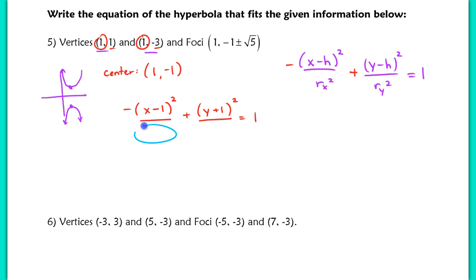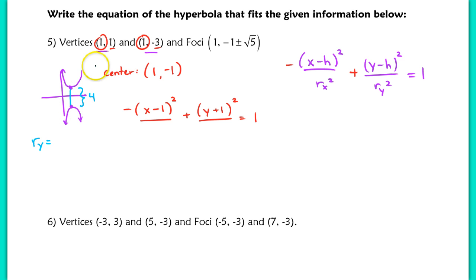Now let's find r sub x squared and r sub y squared. Going back to the vertices, the distance between them represents the transverse axis length. Since the transverse axis runs up and down, it's directly related to r sub y. The total transverse axis length is 4 units, so r sub y — which is the distance from the center to a vertex — is 2. Squaring r sub y gives us 4 underneath the y-squared term.